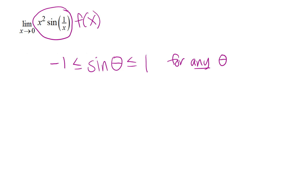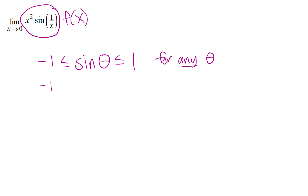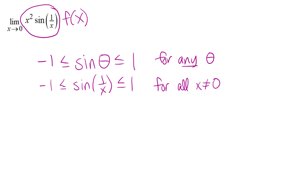This works the same way for a cosine function — outputs are always trapped between -1 and 1. In this problem I have sine of 1/x rather than just sine of x, but this inequality is still true except at the one place where I can't plug in a value of x, which is when x equals 0. So the inequality -1 ≤ sin(1/x) ≤ 1 holds for all x except x = 0. Fortunately, the limit isn't asking about what happens at x = 0 — it's asking about what happens when x is near 0.